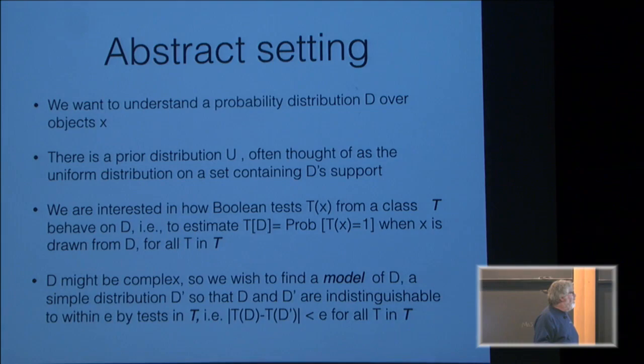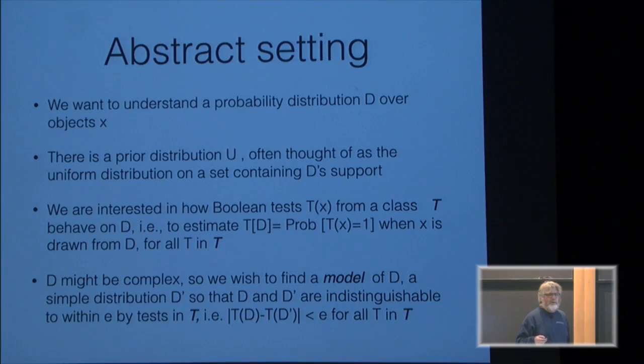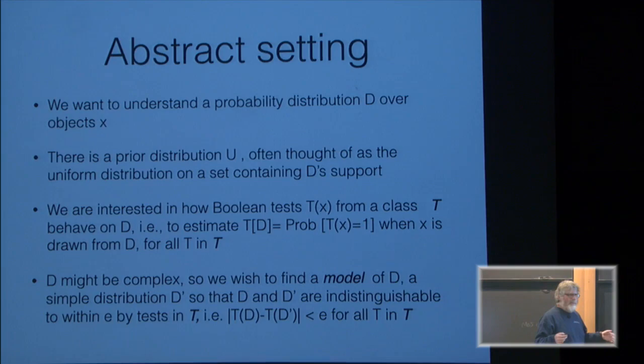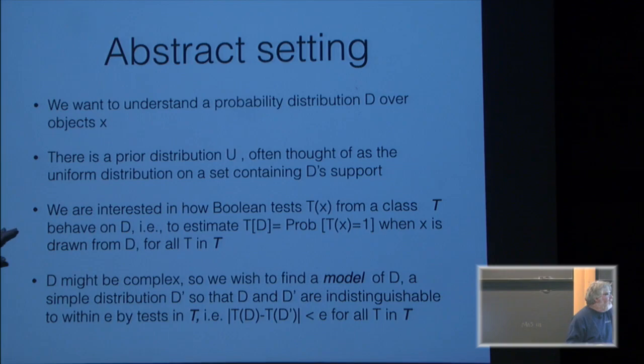Both the scientific and mathematical perspectives share a similar abstract setting. We have a probability distribution over some kind of object — in the painting example, a distribution over particular pixels: pick a random point on the painting and look at the color, the x, y, and color value. There's some a priori distribution over all objects of that category, often thought of as the uniform distribution. And we have a class of tests that we're interested in estimating.